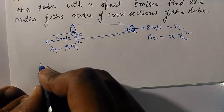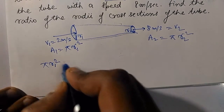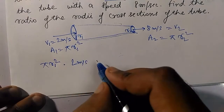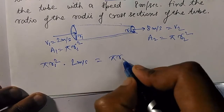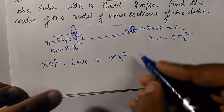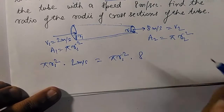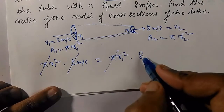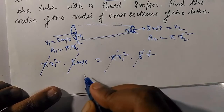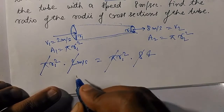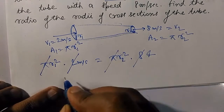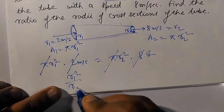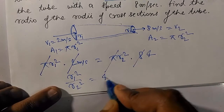Using A1·V1 = A2·V2, and since the cross-sections are circular, area = π·r². So π·r1²·v1 = π·r2²·v2. Pi cancels. We get r1²/r2² = v2/v1 = 8/2 = 4. Therefore r1/r2 = 2, giving the ratio of radii r1:r2 = 2:1.